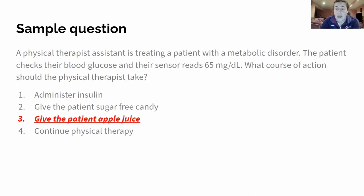The answer is: give the patient apple juice. Apple juice is going to have tons of sugar in it, which will help get that blood sugar up. Many patients with type 1 diabetes have apple juice, applesauce, orange juice — anything with quick sugar that they can get — usually handy.